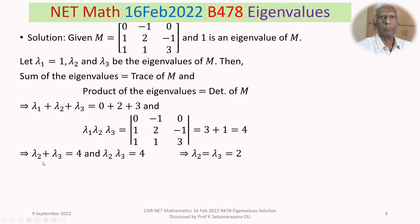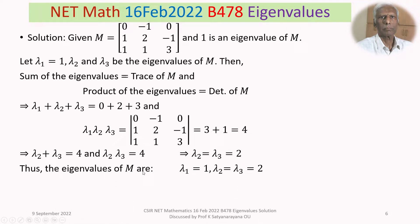It is easy to see that lambda2 = lambda3 = 2. This means eigenvalue 2 is repeated twice — its algebraic multiplicity is 2. Thus the eigenvalues of M are lambda1 = 1 and lambda2 = lambda3 = 2, where 2 is a repeated eigenvalue.